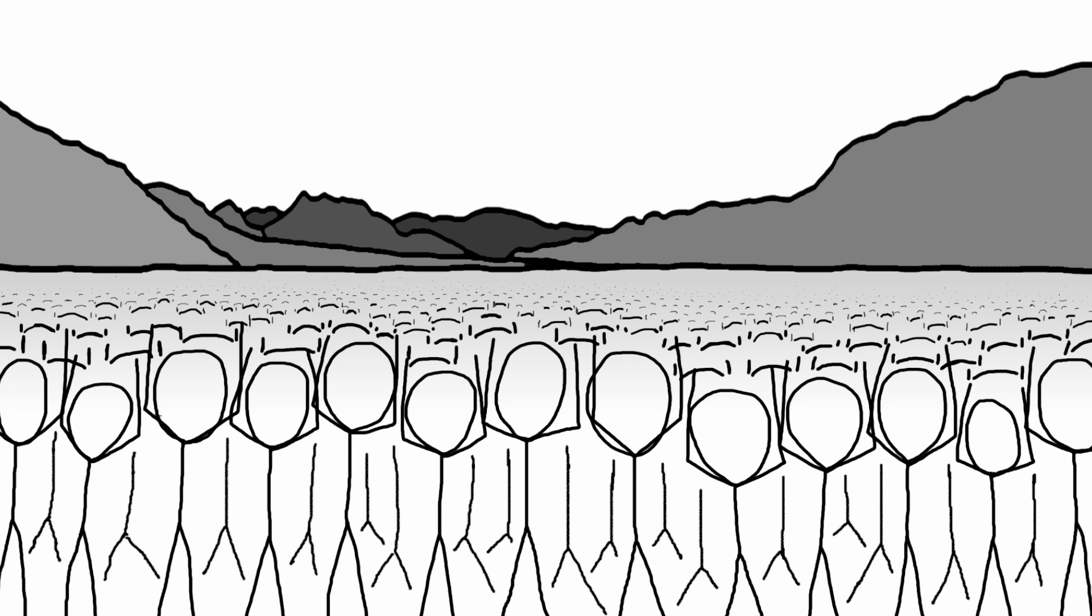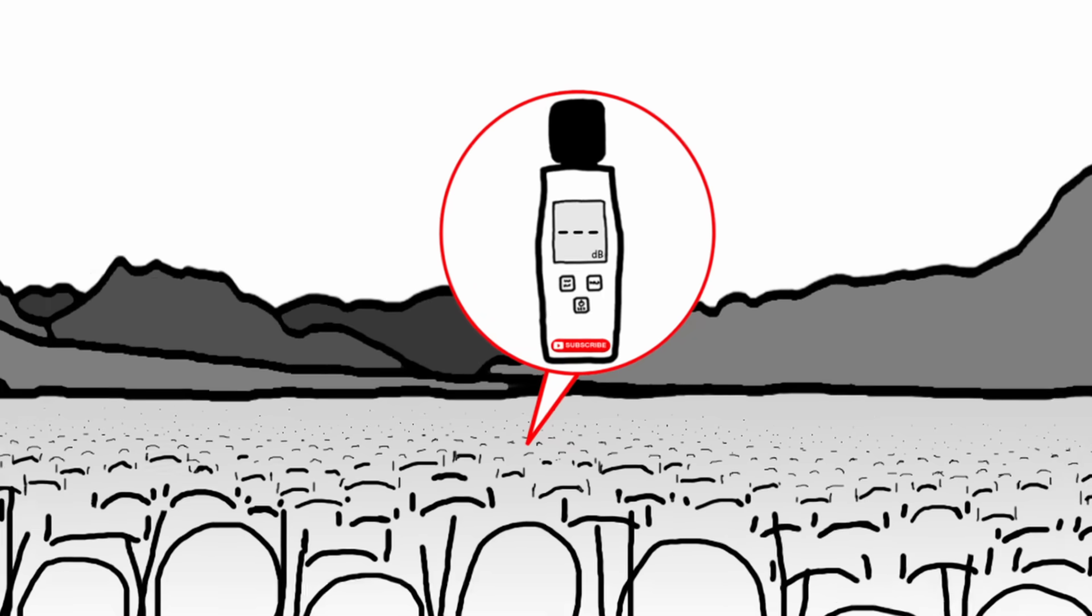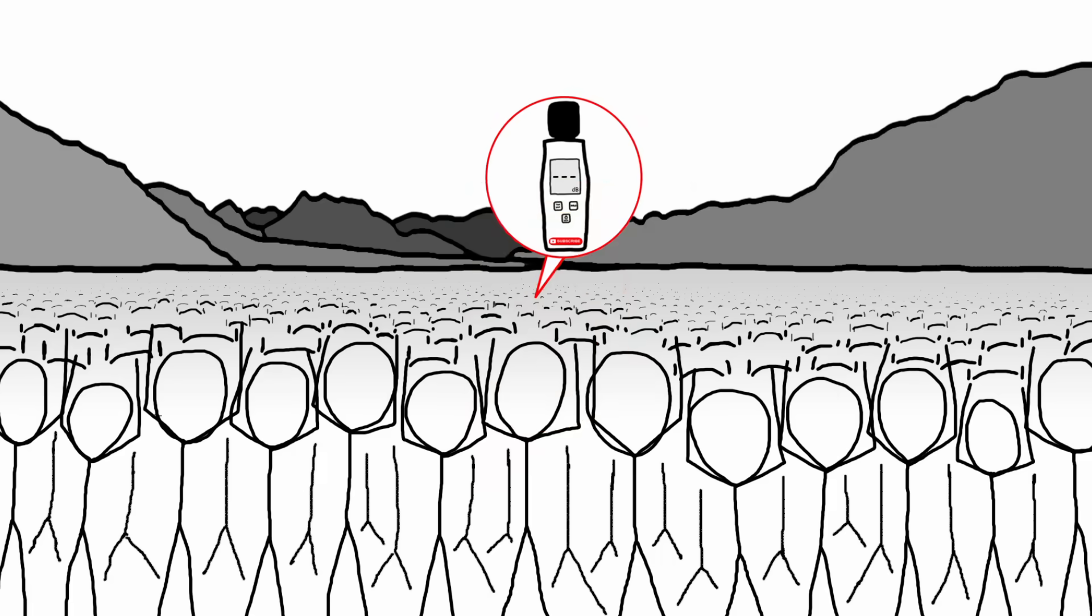Also, the clap from the person in the last row wouldn't be heard all the way to the front row due to the dispersion of sound energy. Let's see how loud we can get. We'll measure the sound with a decibel meter. Ready? Five, four, three, two, one.